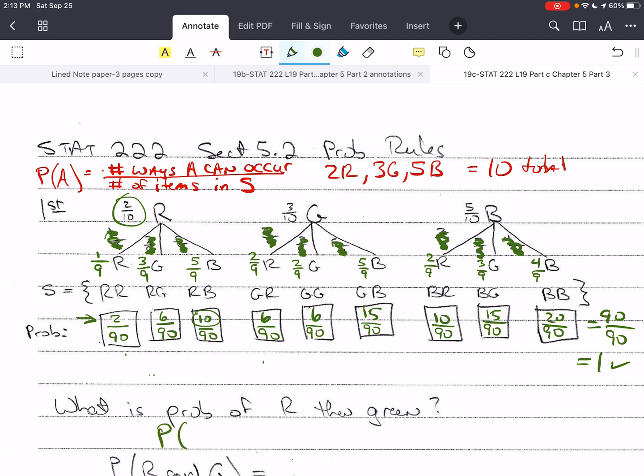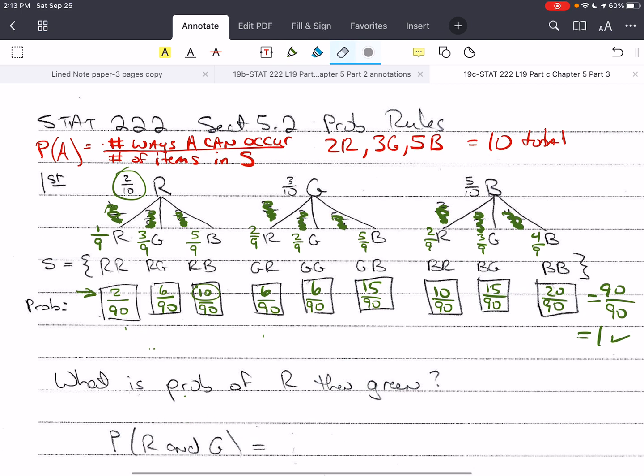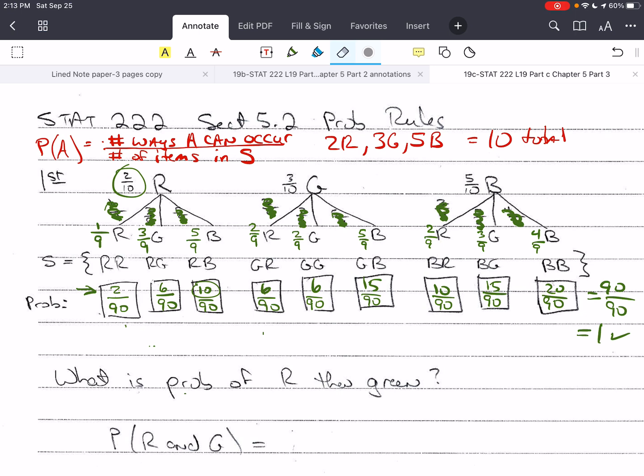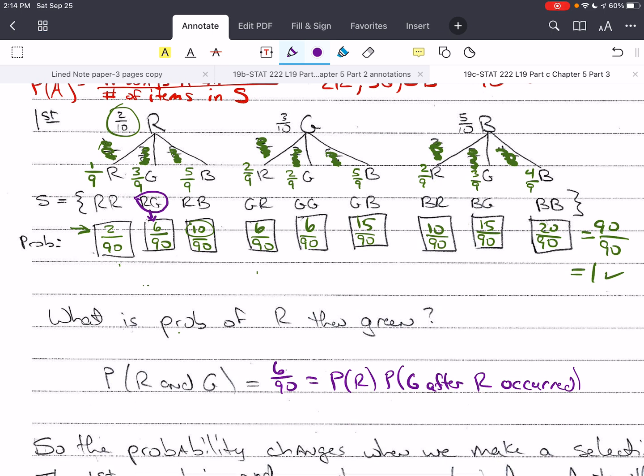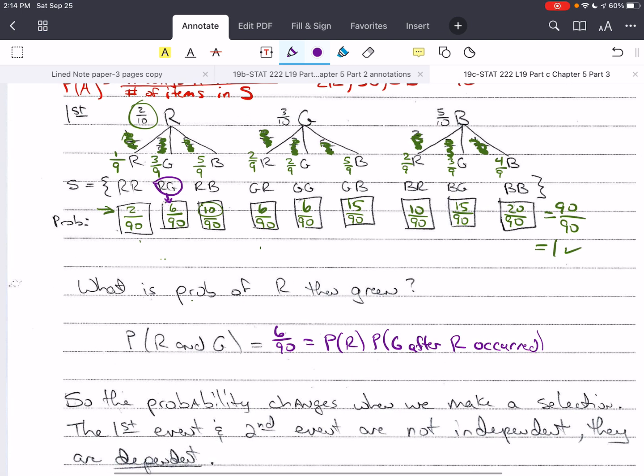Now, we want the probability of R and G. Here is R and G and here's the probability. It's 6 over 90. How did we get this? This was equal to the probability of red times the probability of green after red had occurred. And we're going to do some notation for this. As I said, the probability changes when we make a selection without replacement. The first event and the second event are not independent of each other. They are dependent.